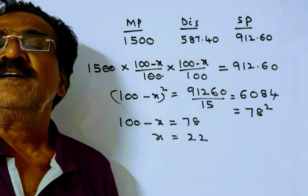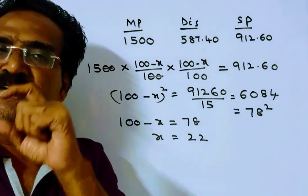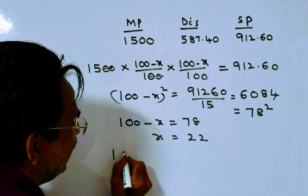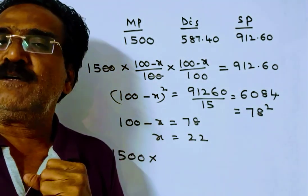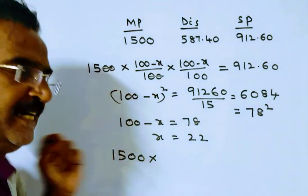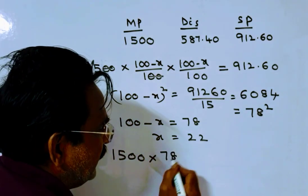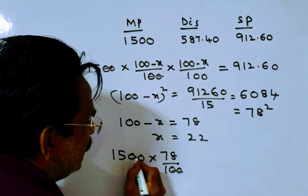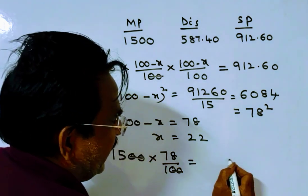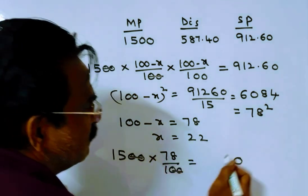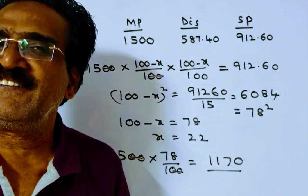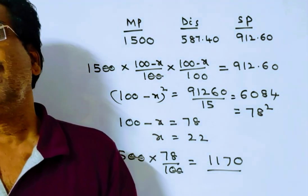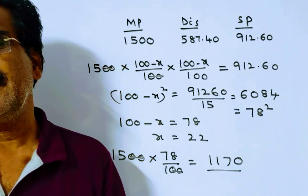Now we want the selling price after a single discount of x percent. So 1500 is the market price, 22 percent single discount means selling price is 78 percent. So 15 times 78 is 1170. Therefore 1170 is the selling price after a single discount of x percent. Thank you.